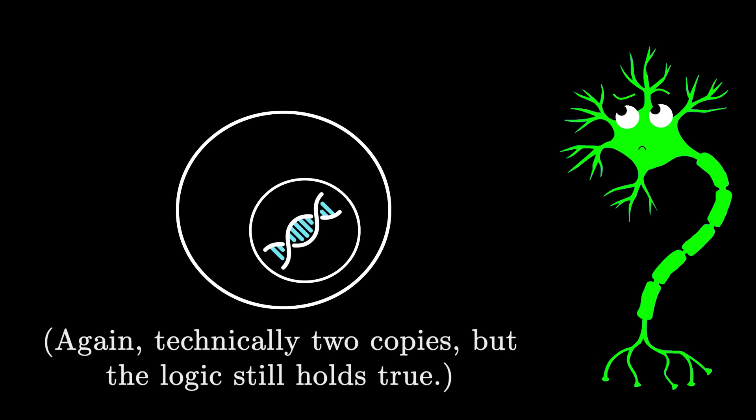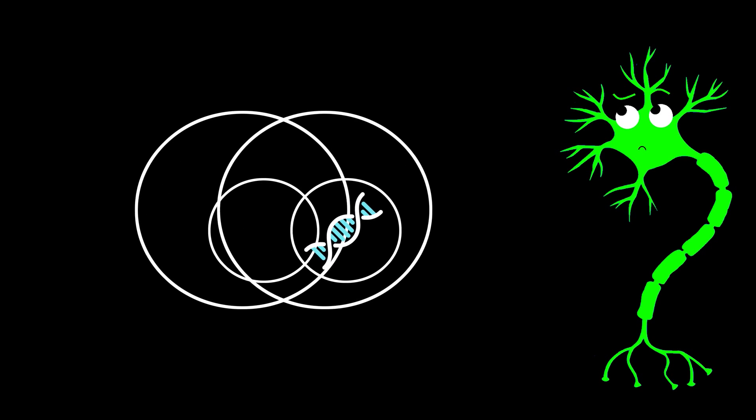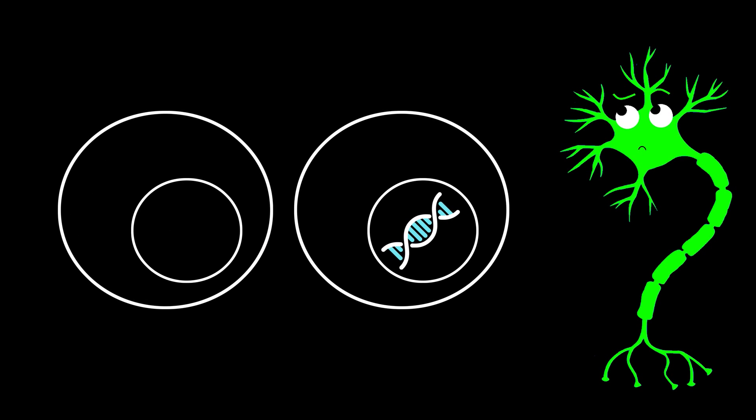However, you also know, because I've told you, that each cell contains exactly one copy of the recipe book, only one copy of the genome. So when one cell splits into two daughter cells, what happens to the DNA?